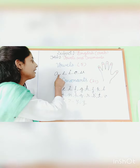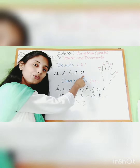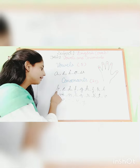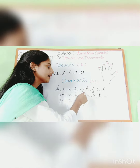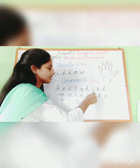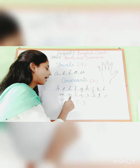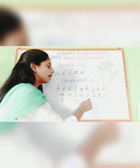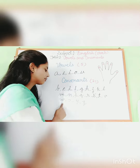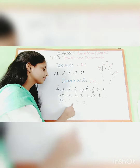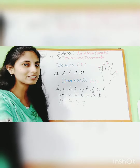See vowels: A, E, I, O, U. And consonants: B, C, D, F, G, H, J, K, L, M, N, P, Q, R, S, T, V, W, X, Y, Z. These are consonants.